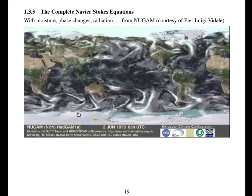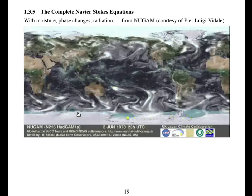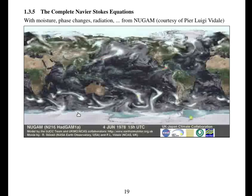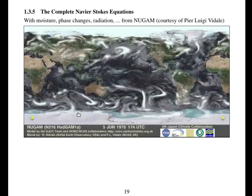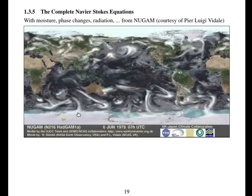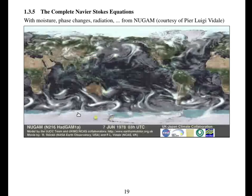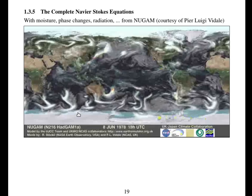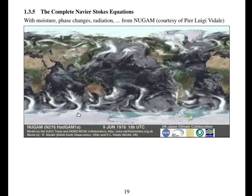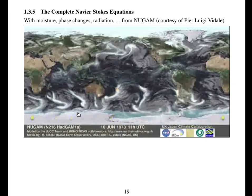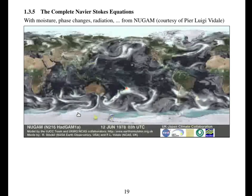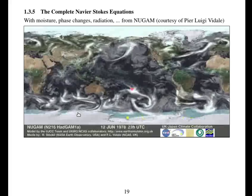So if you put all of that together you solve the complete Navier-Stokes equations along with equations for water vapour and changes in water vapour phases and radiation. You'll get a simulation of the global atmosphere. And this is a simulation from courtesy of Pierre-Luigi from the Met Office NewGum model, run at quite high resolution.